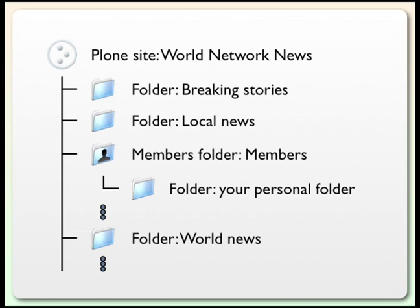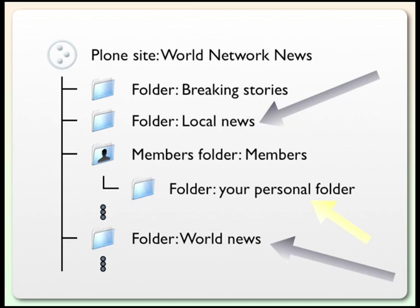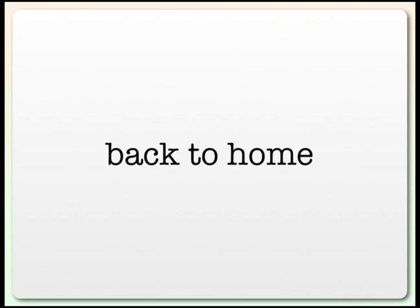Now let's add some content to this demonstration site that I've set up. But where should we add it? Well, depending on the site, the permissions that the site has set up, and the permissions assigned to your account, that really depends. For example, if you're on the Local News staff, you might be able to add content directly to the Local News folder. If you're on the World News staff, perhaps you can go right to the World News folder. In most situations, though, you can add content almost always to your own Personal folder, and that's where we're going to add the content in this screencast.